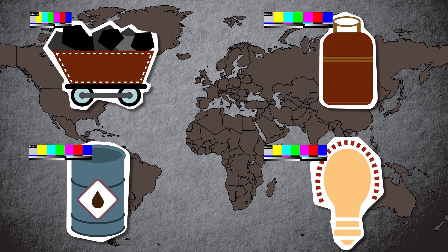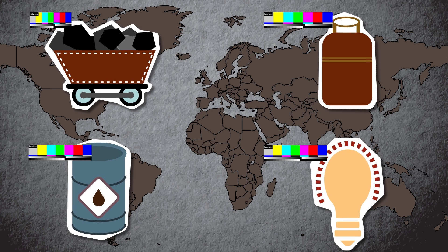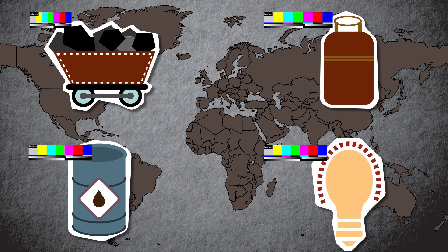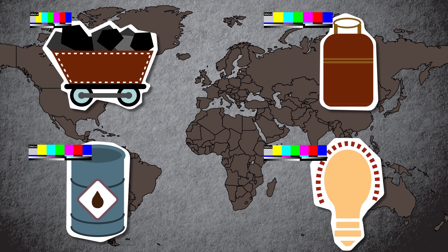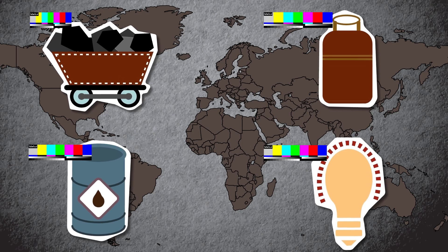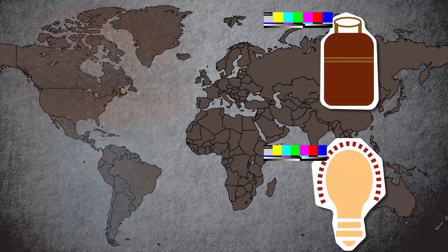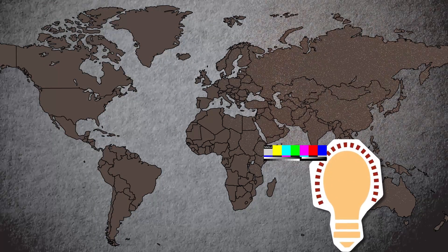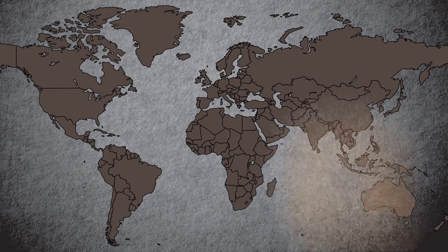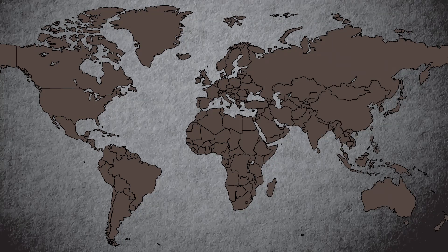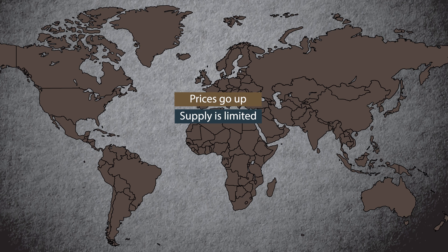There is one more problem with these conventional energy resources — they are depleting. The supply of resources such as coal, petroleum, and natural gas is limited. We will run out of these resources. As supply is limited, prices go up and many countries lose their growth rate as they spend more on importing these resources.